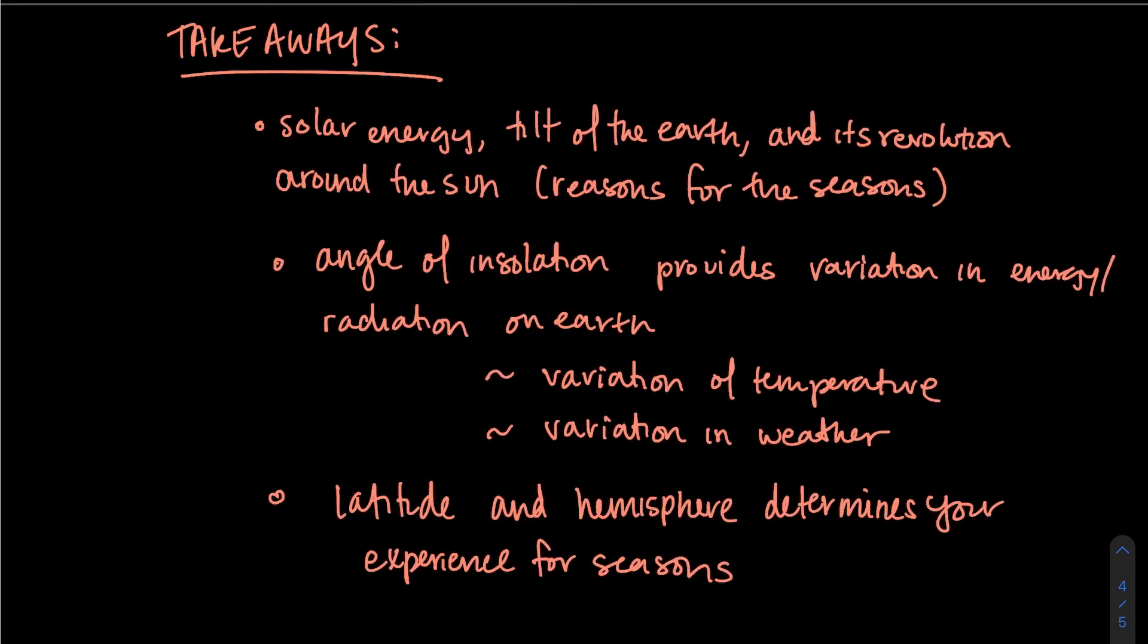So let's recap. Solar energy, the tilt of the Earth, and its revolution around the sun gives us seasons. The angle of insolation provides solar radiation that then provides us energy and variation for our weather and temperature. This is all based on the location of where you are on Earth. So your hemisphere and latitude determines the types of seasons that you experience.